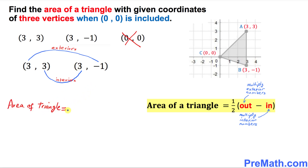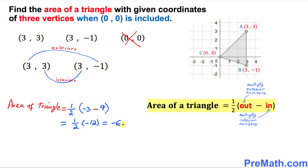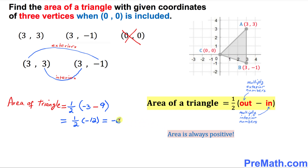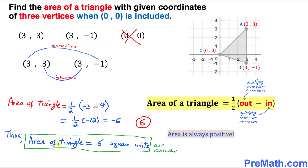So the area of this triangle is one-half times the exterior numbers first: three times negative one is negative three. Then put a minus sign and multiply the interiors: three times three is nine. Simplifying, that gives one-half times negative six, which equals negative three. Since area is always positive, this becomes positive six. Thus the area of our given triangle turns out to be positive six square units — that is our answer.